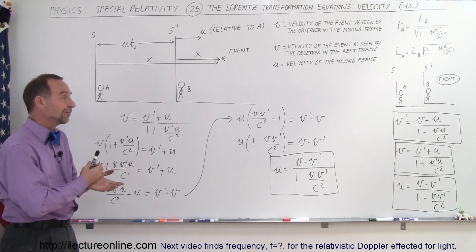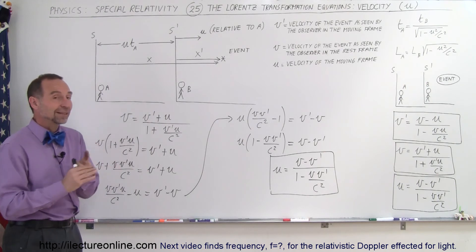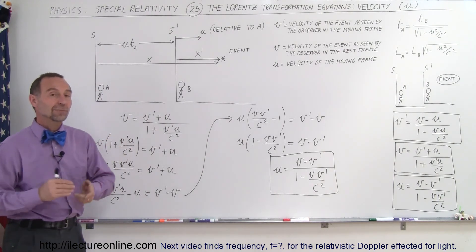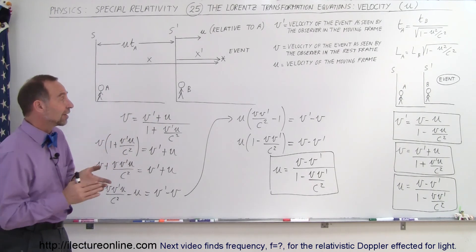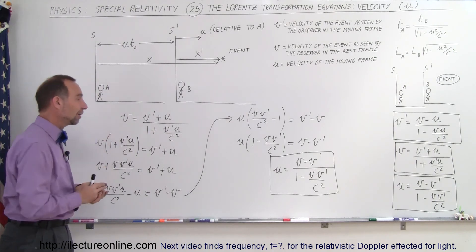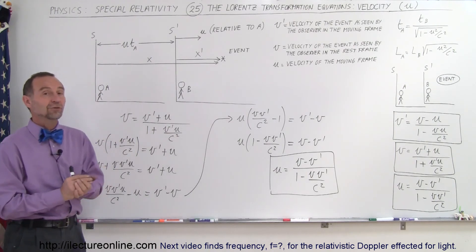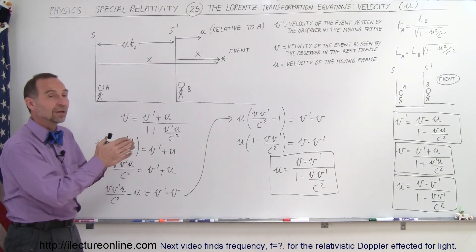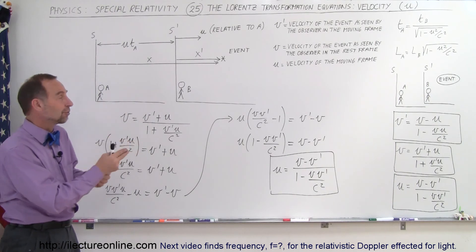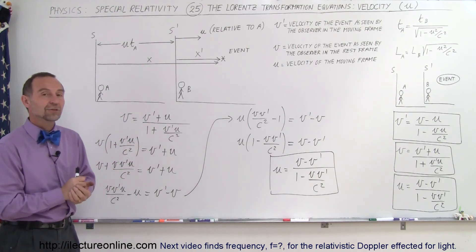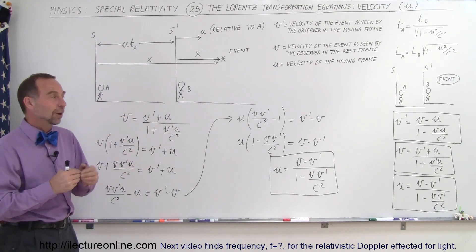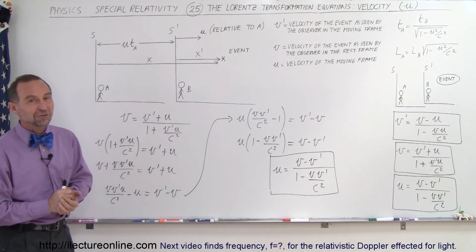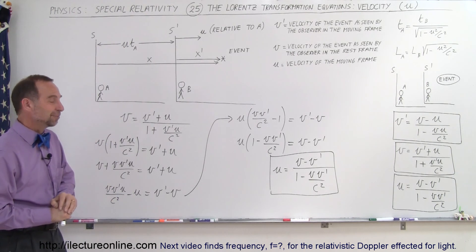You can find the velocity of an event as seen by the observer in the moving reference frame, the velocity as observed by the observer in the stationary reference frame, or the velocity of the moving reference frame as observed by the stationary reference frame. And that's how we do that.